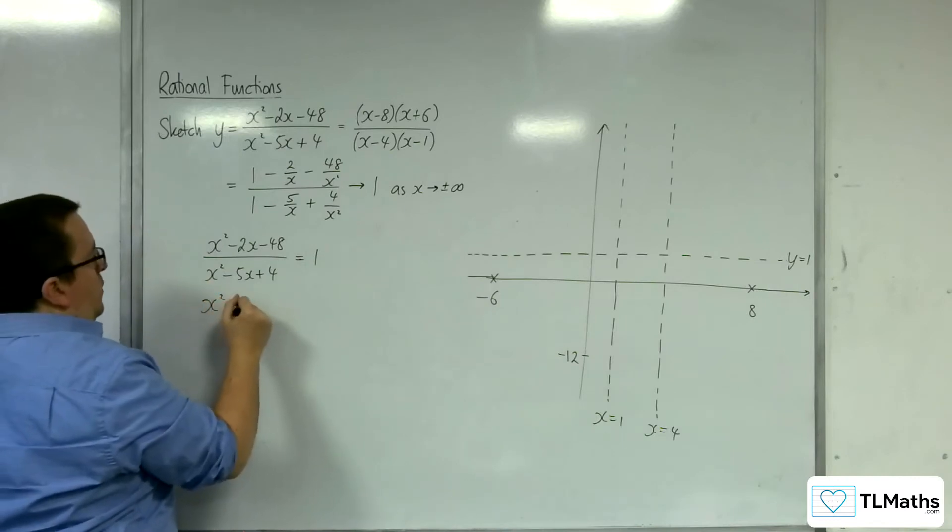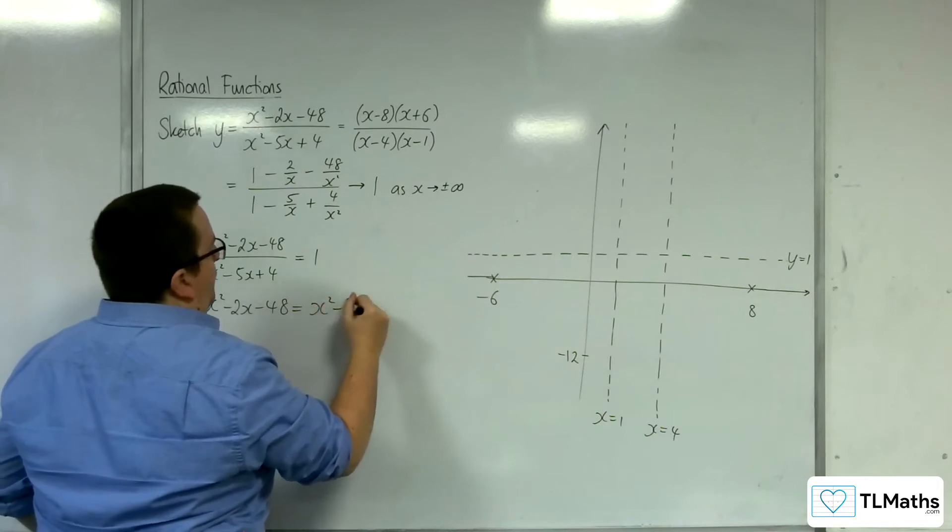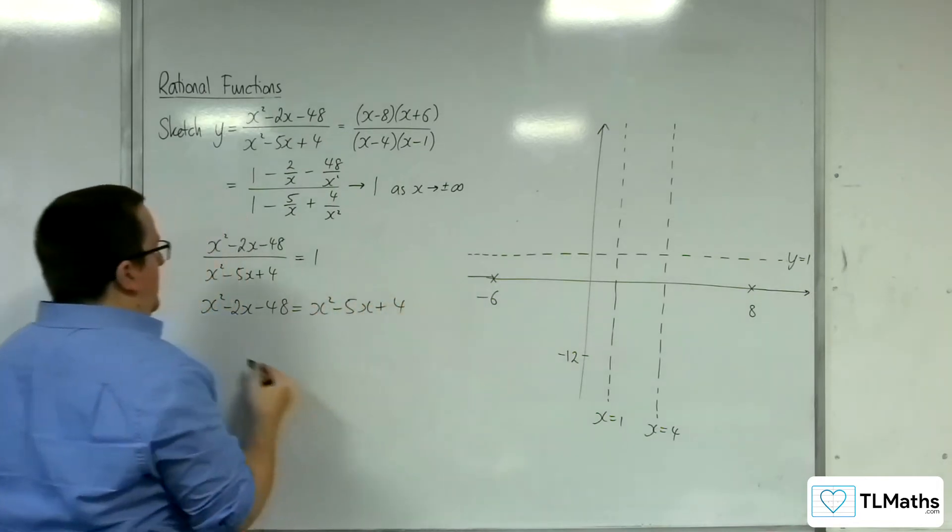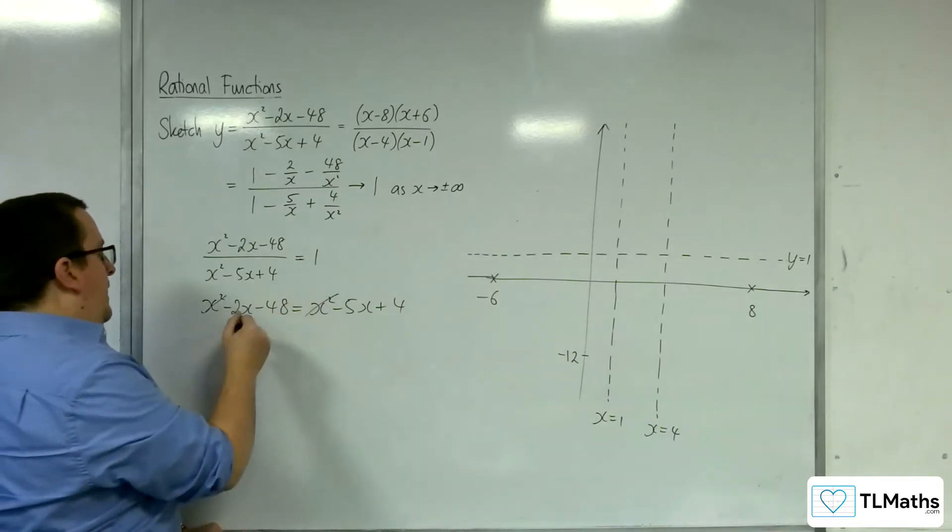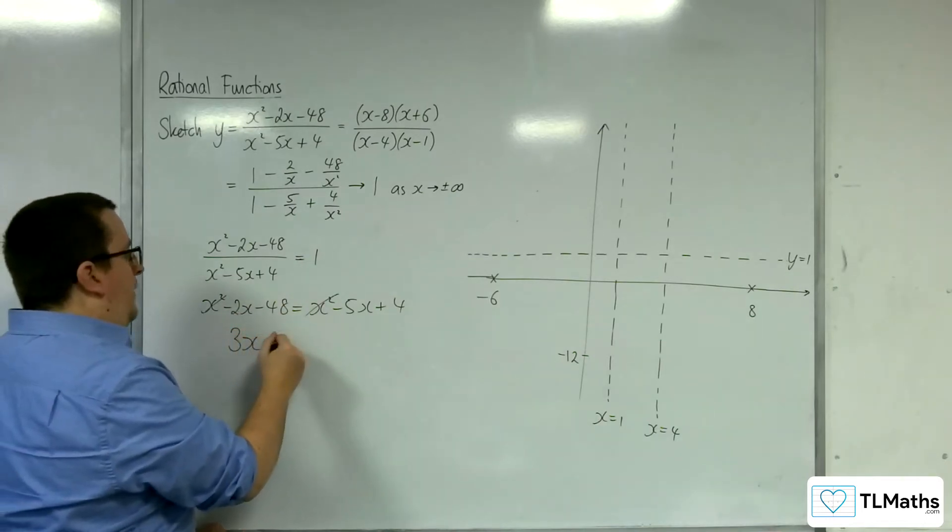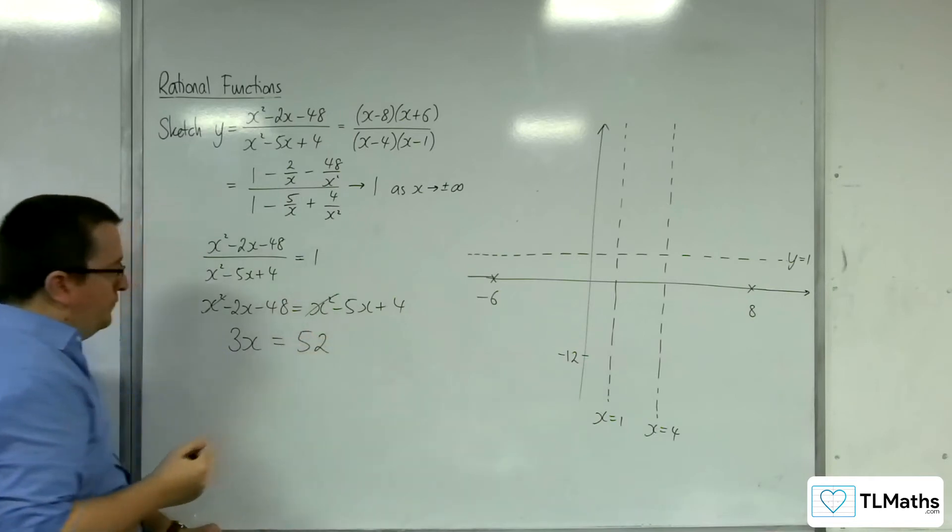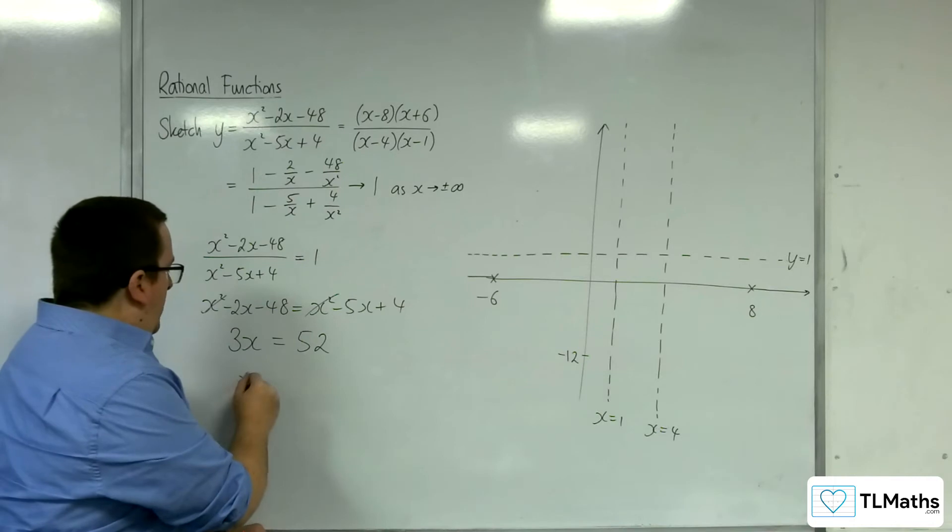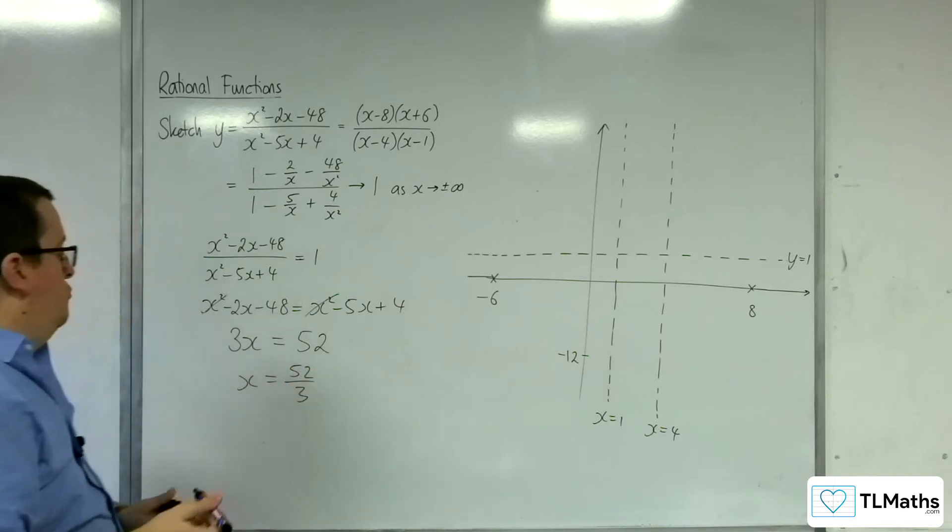So x squared take away 2x take away 48 is equal to x squared take away 5x plus 4. So I can subtract x squared from both sides. If I add 5x to both sides, I get 3x, and 48 plus 4 is 52. So x is going to be equal to 52 over 3.